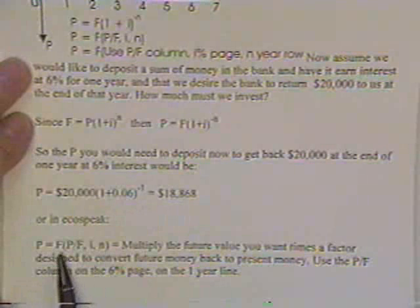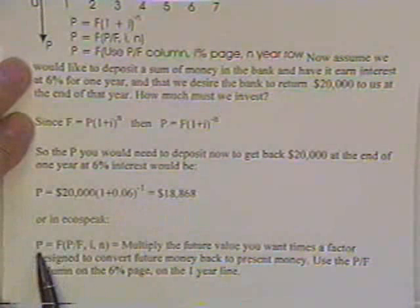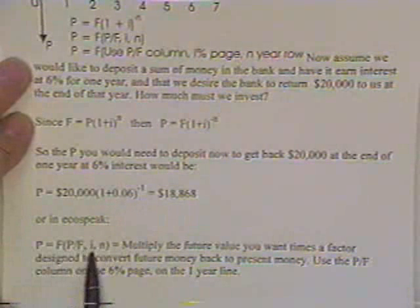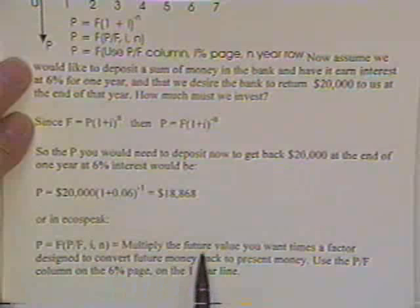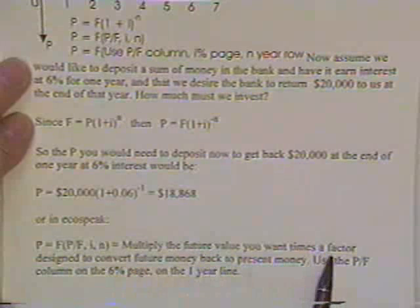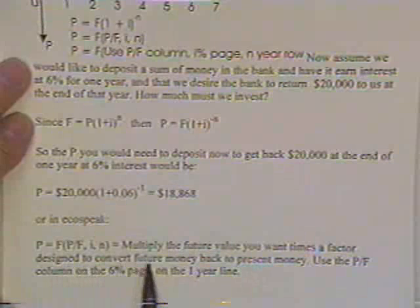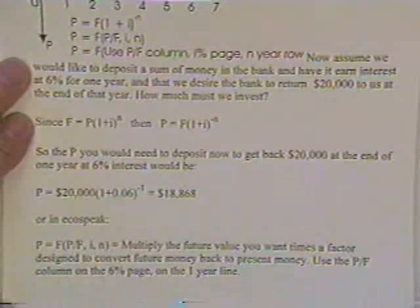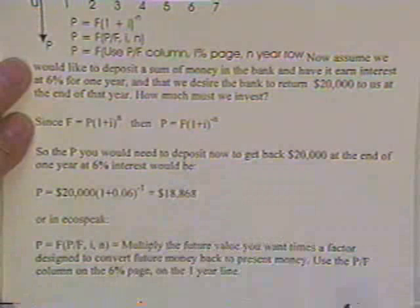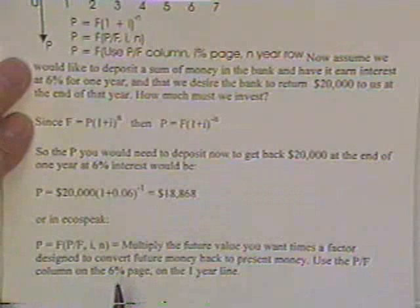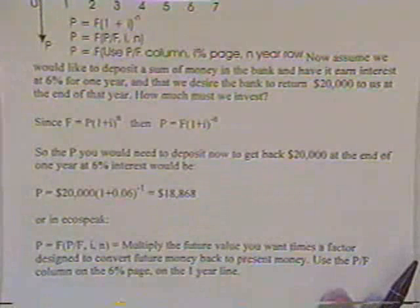The way we do it in economics, we say you can take the future value and change it to the present value by multiplying some factor in the table. Multiply the future value you want times a factor designed to convert future money back to present money. In that case, you would use the P over F column, the six percent page, the one year line.